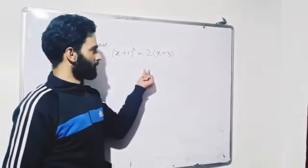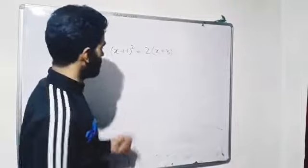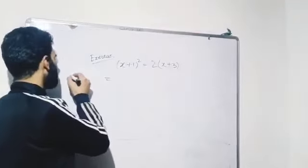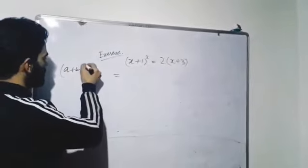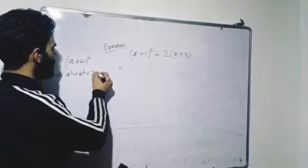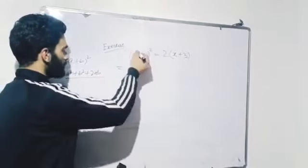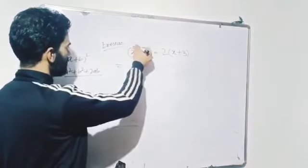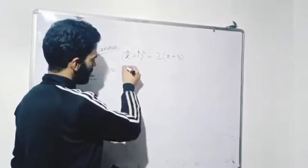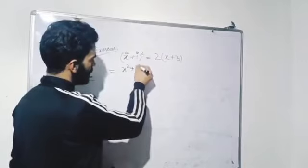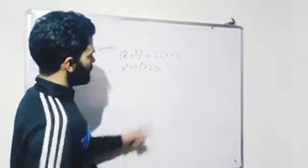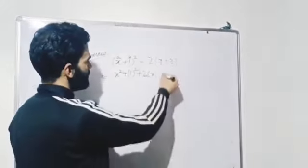Now we expand x plus 1 whole square using the identity: a plus b whole square equals a squared plus b squared plus 2ab. Here, a equals x and b equals 1. So we get: x squared plus 1 squared plus 2 into x into 1, which gives x squared plus 1 plus 2x.